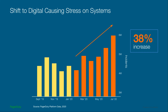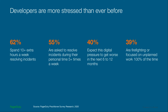We're not only seeing this in our data — we've also run a survey to see what teams are experiencing in terms of increased operational load, with some pretty startling results. We see that 62% of respondents — across 700 people around the world — were spending 10 or more extra hours a week resolving incidents. 55% are being asked to resolve incidents during their personal time five or more times a week. 40% expect this digital pressure to get worse in the next 6–12 months. And 39% are firefighting or focused on unplanned work 100% of the time.